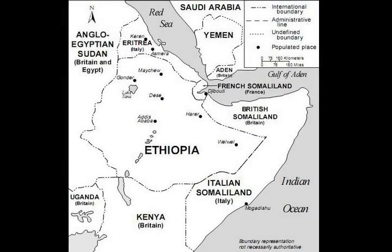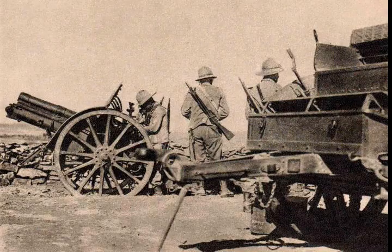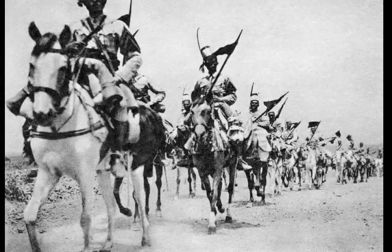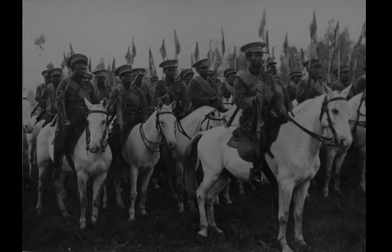His orders from General Emilio de Bono were to dig in and wait for the Ethiopians to attack. Graziani set out to convince de Bono's commander, Italian dictator Benito Mussolini, that the plans for the campaign needed to be changed to allow him and his army on the Southern Front to play a more active role. Mussolini wanted action and was willing to listen. In the end, Graziani's plan for an offensive on the Southern Front had the tacit approval of Rome, if not de Bono.